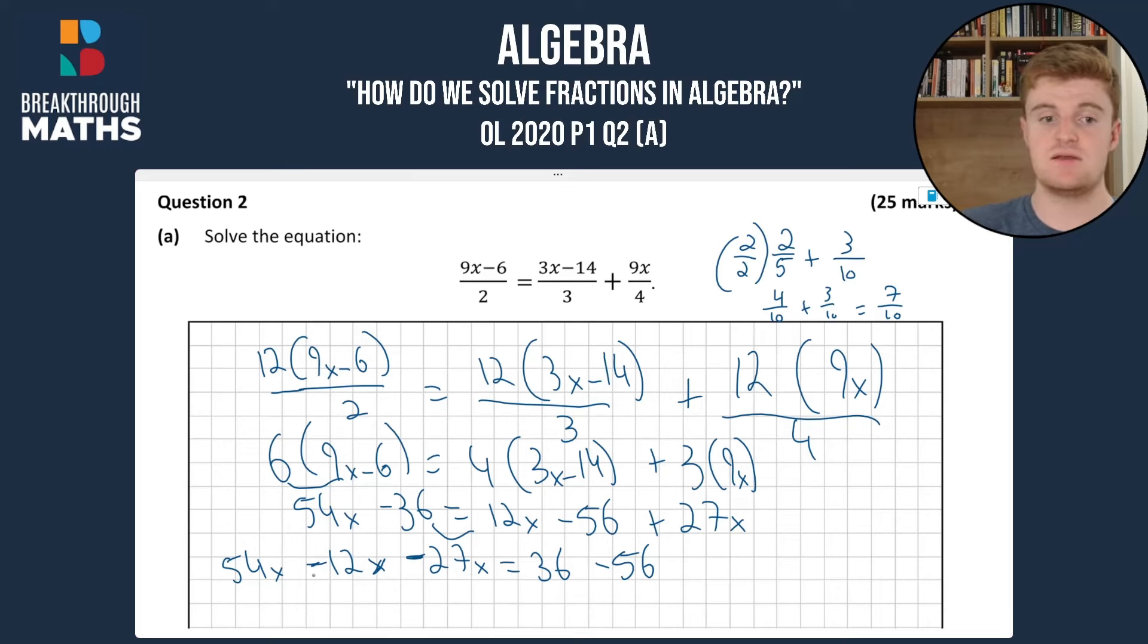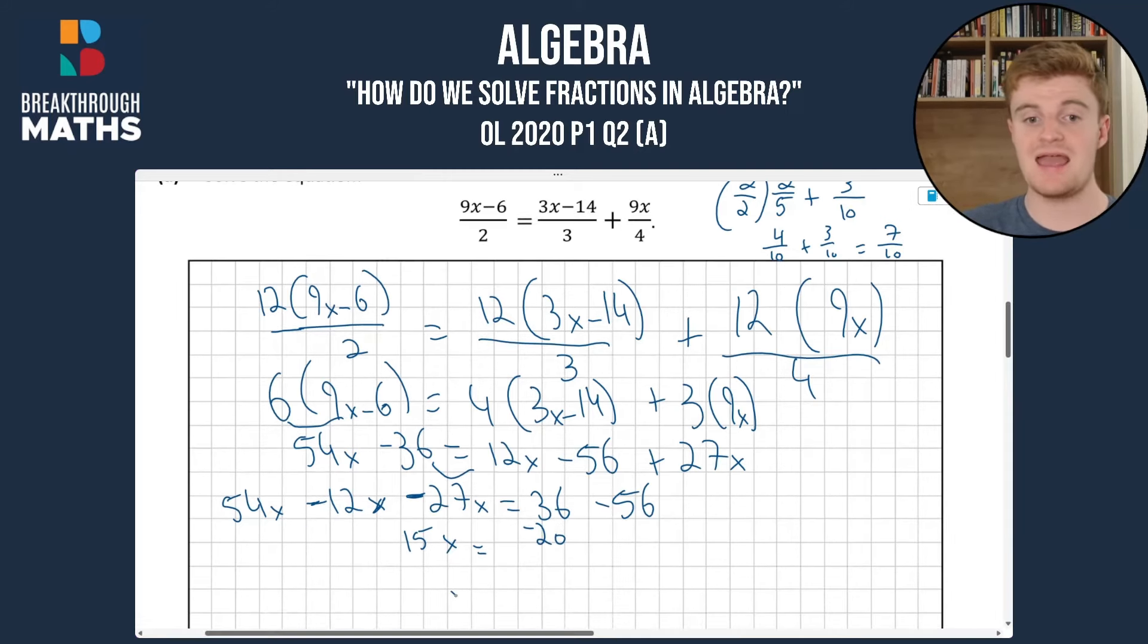So 54 minus 12 will give us 42, minus 27 will give us 15x equals minus 20, and x equals minus 20 over 15, or if we want to simplify it, minus 4 over 3.